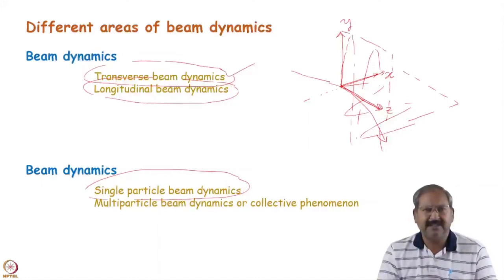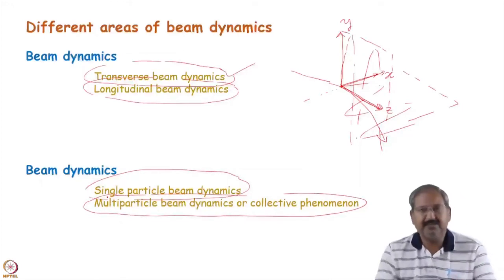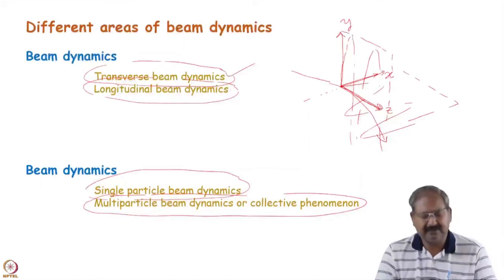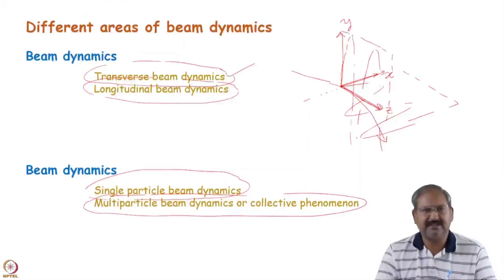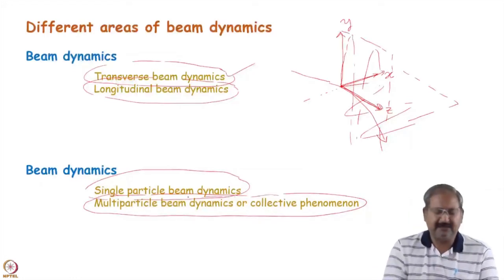In single particle beam dynamics, each particle sets its own trajectory without being affected by other particles in the beam. In reality this is not so, because all particles are charged - when they move together they can affect each other's motion via direct Coulomb repulsion, magnetic attraction, or via the vacuum chamber. Charged particles induce image charges in the vacuum chamber, which can affect other particles. When we study these phenomena, we are in the realm of multi-particle beam dynamics.